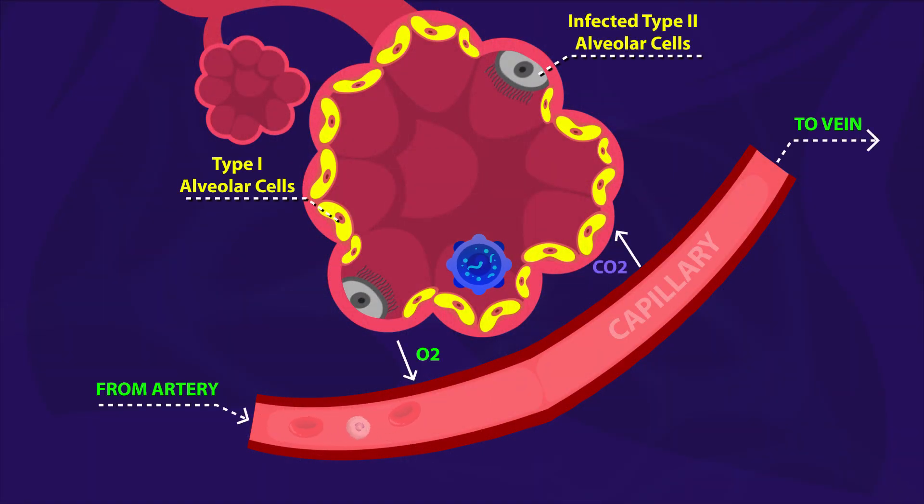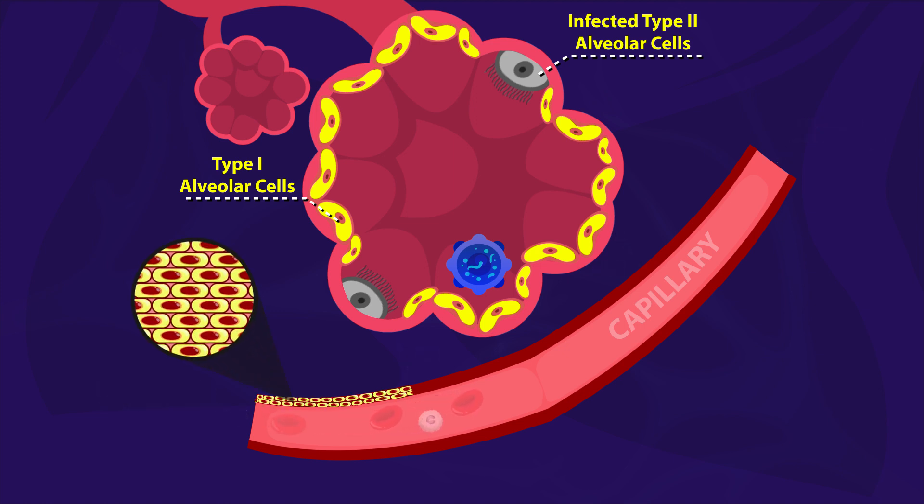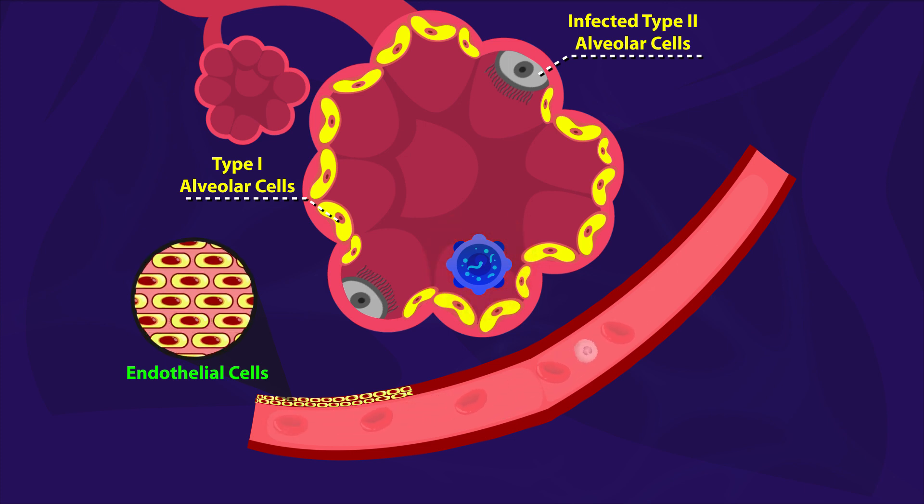Capillaries are the smallest blood vessels, having an endothelial lining comprised of endothelial cells. The inflammatory cytokines increase the spaces between the endothelial cells, causing the capillaries to leak.